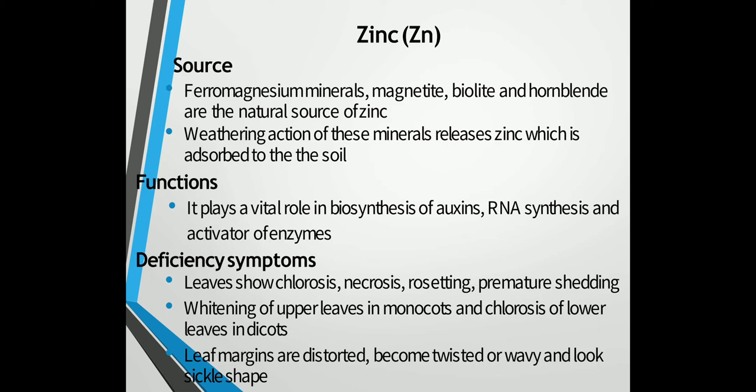Deficiency symptoms of zinc include chlorosis, necrosis, rosetting and premature shedding. In monocots, the upper leaves become white and in dicots the lower leaves show chlorosis. Leaf margins are distorted — the shape changes and leaves become twisted or wavy, getting a sickle-shaped structure.